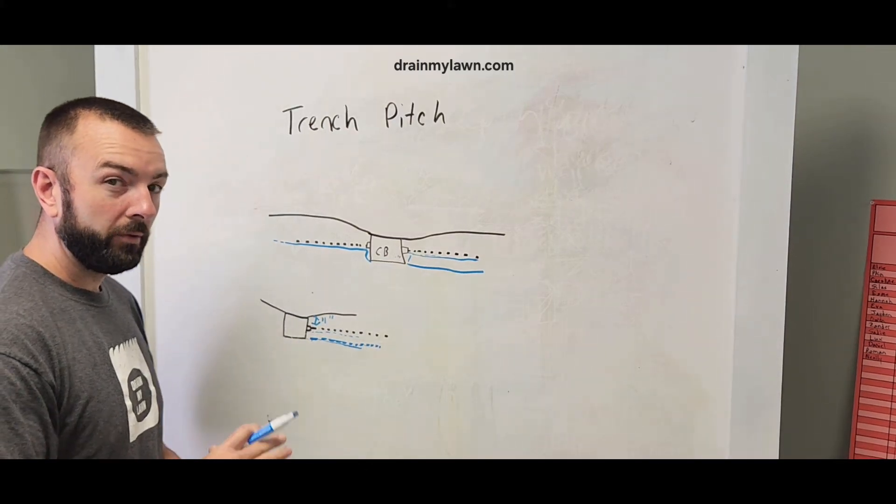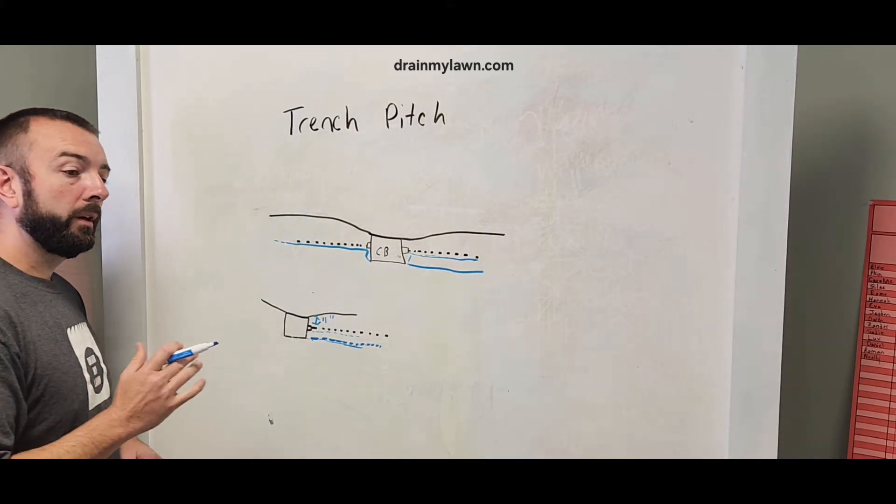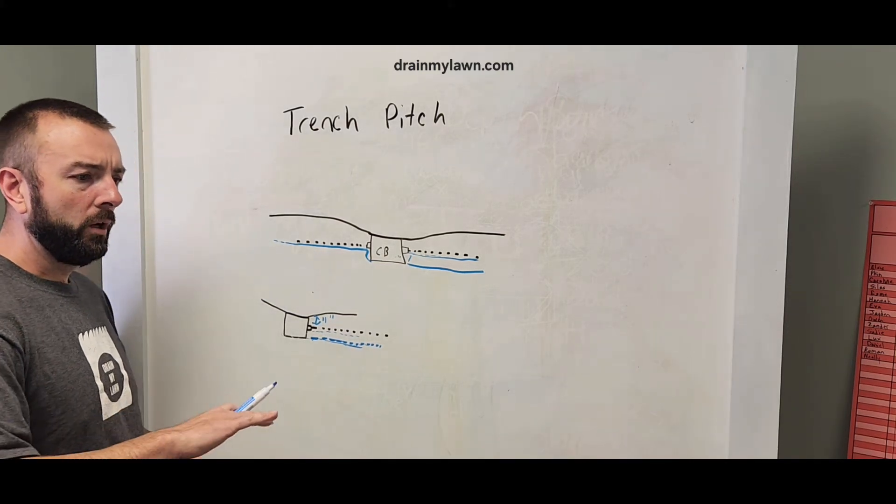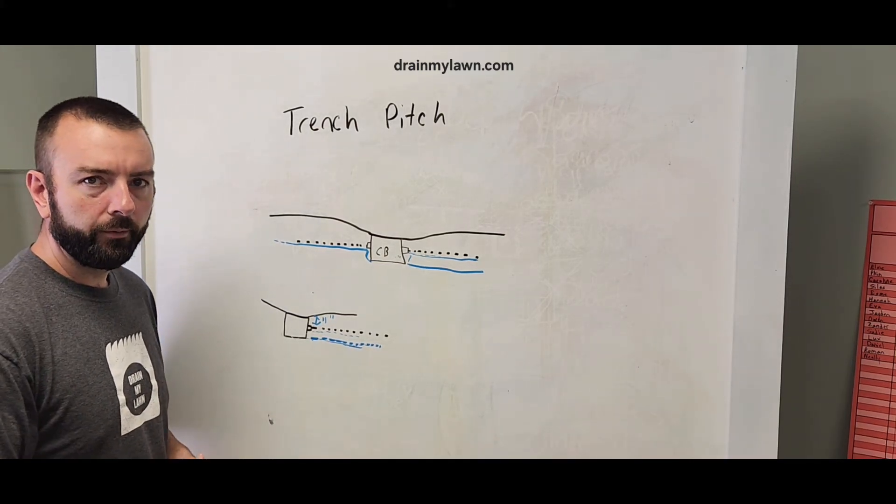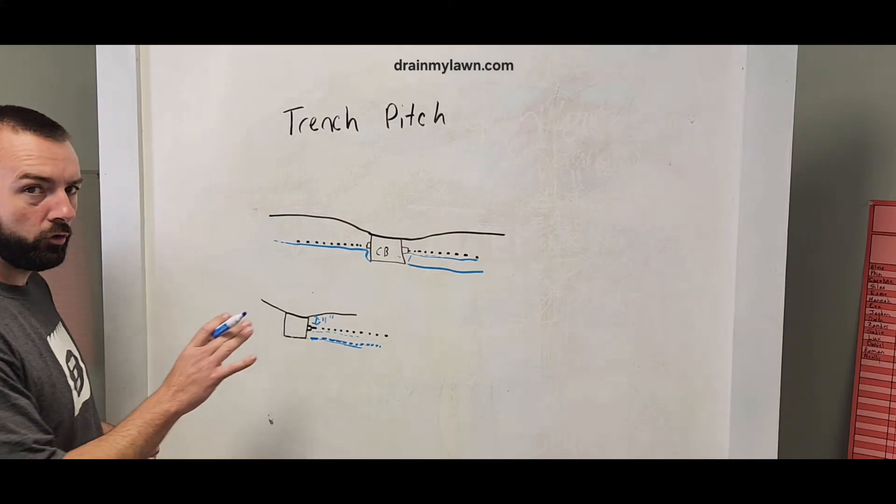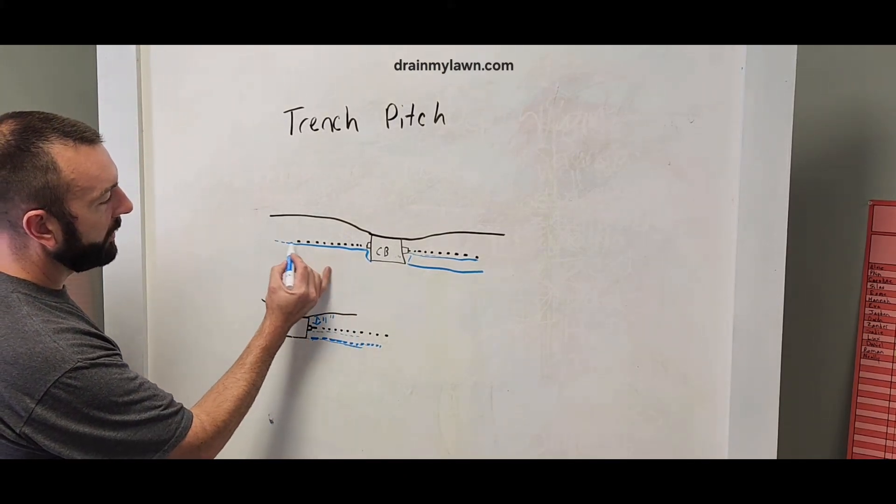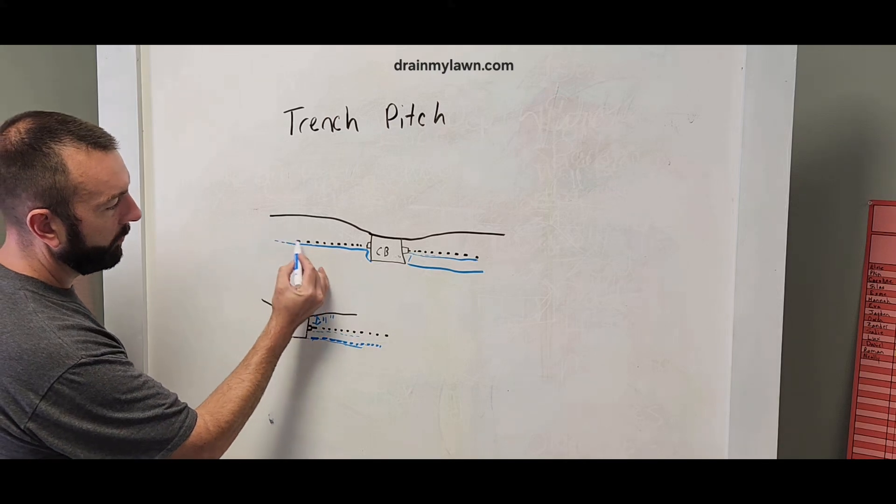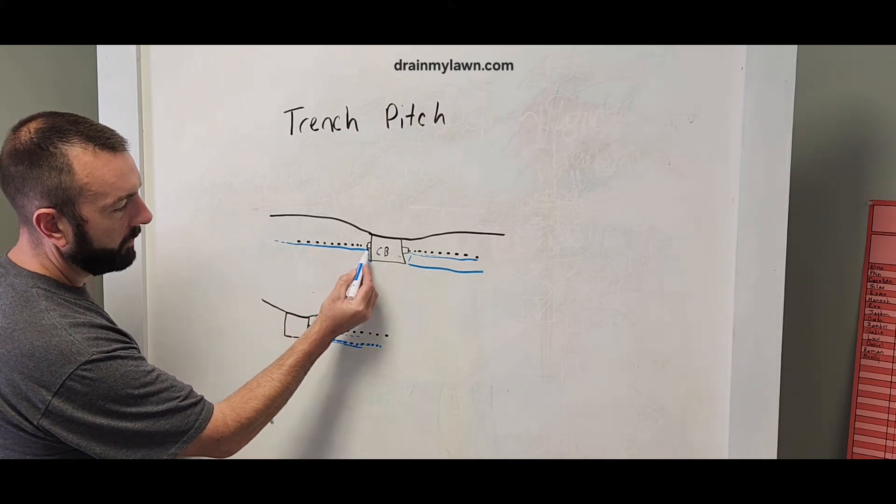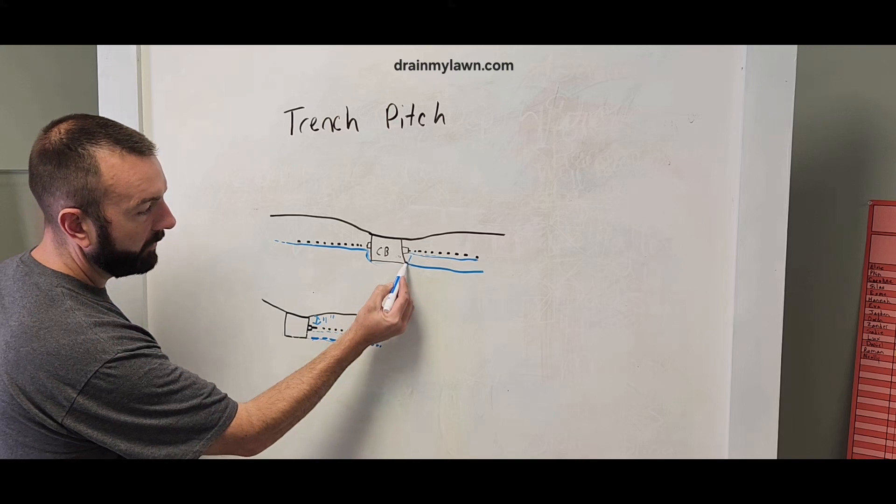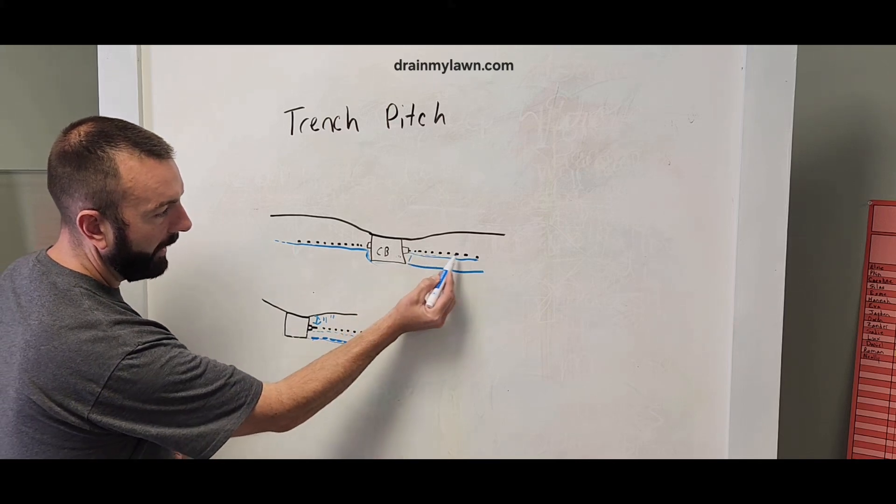Especially in flat properties, you can wind up getting into a big world of hurt with different areas where you have to go really deep over utilities or something like that. So make sure you don't over excavate for no reason. You're going to keep your trench depth 11 inches, your normal depth, get to your catch basin, dig it out as you need to,